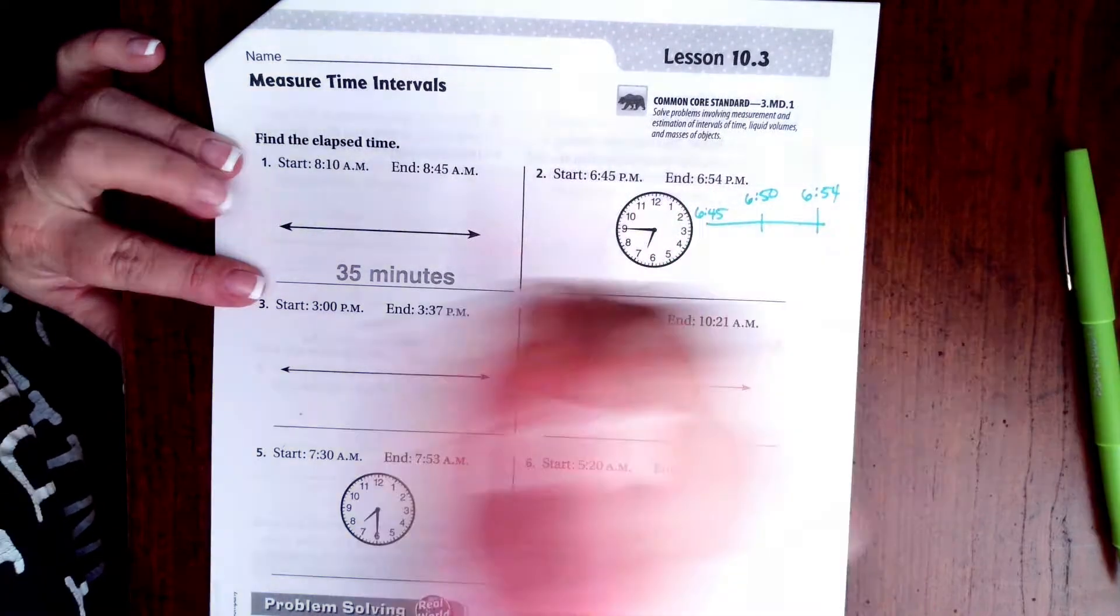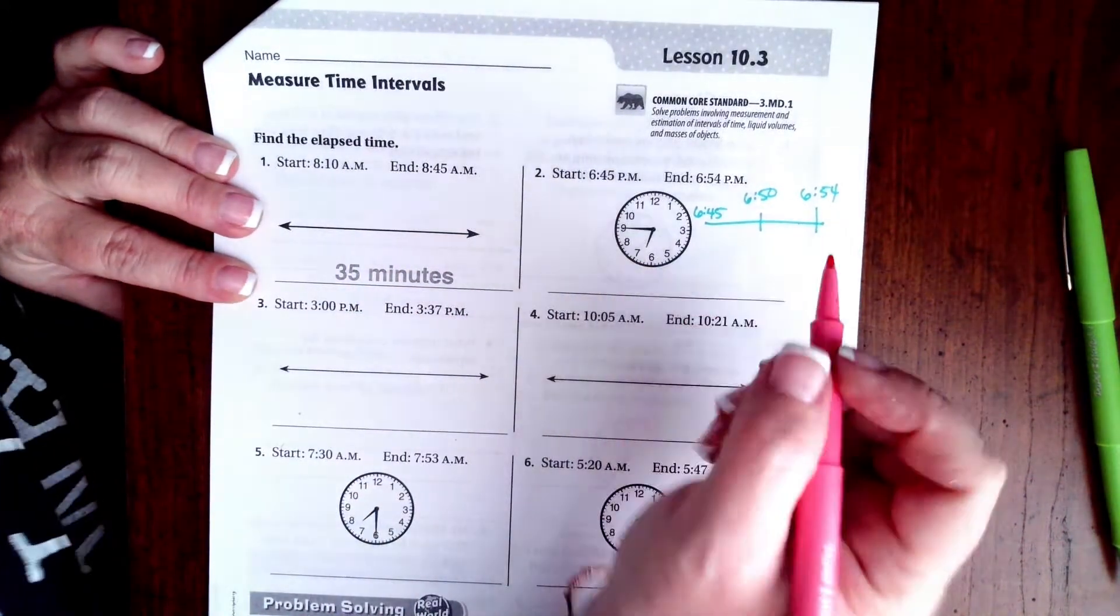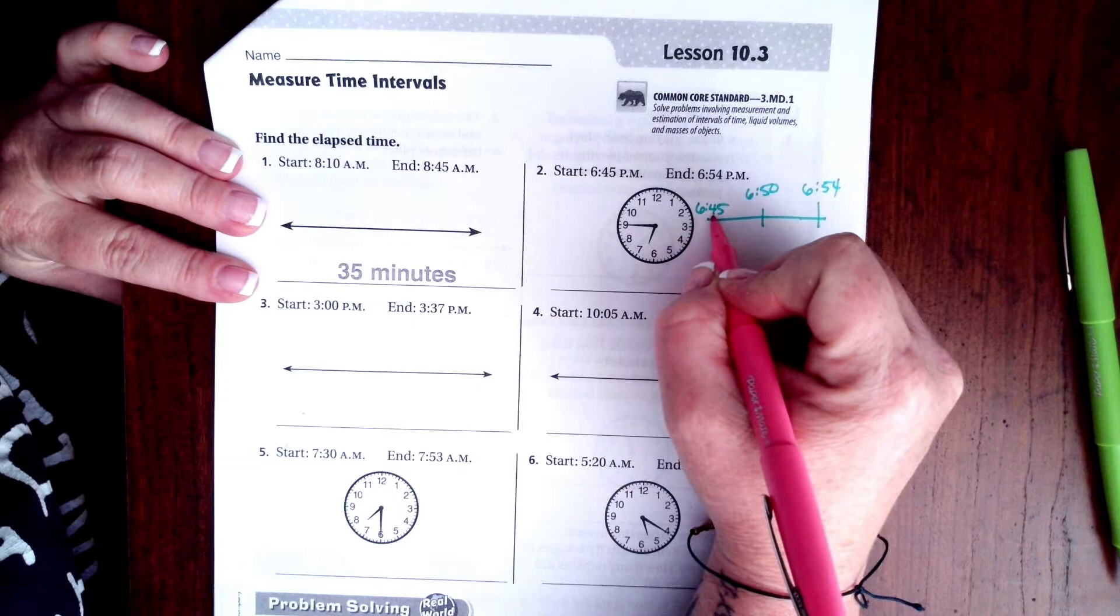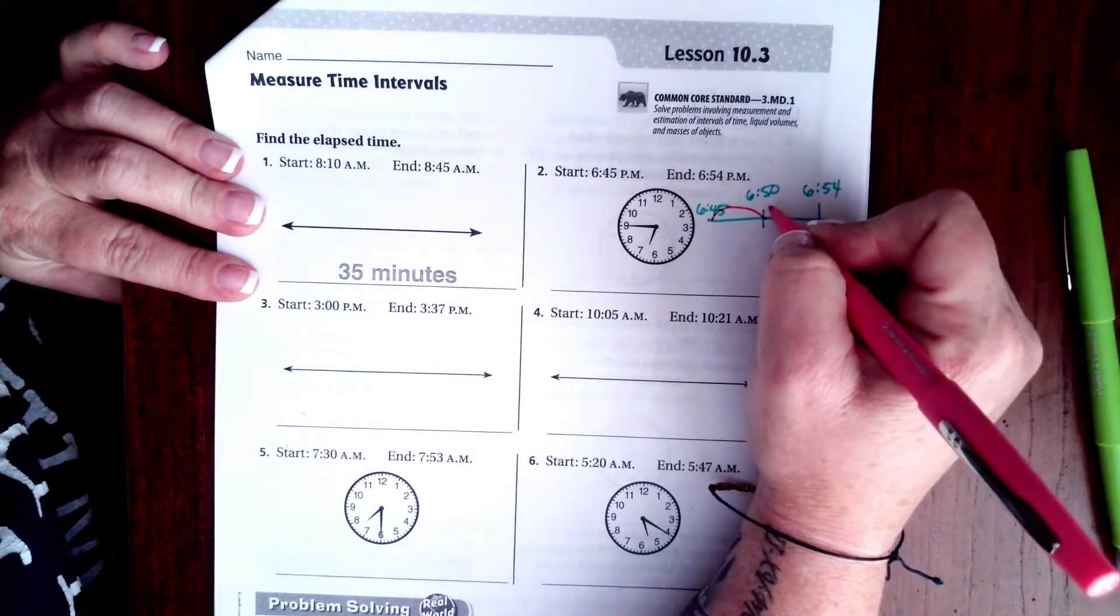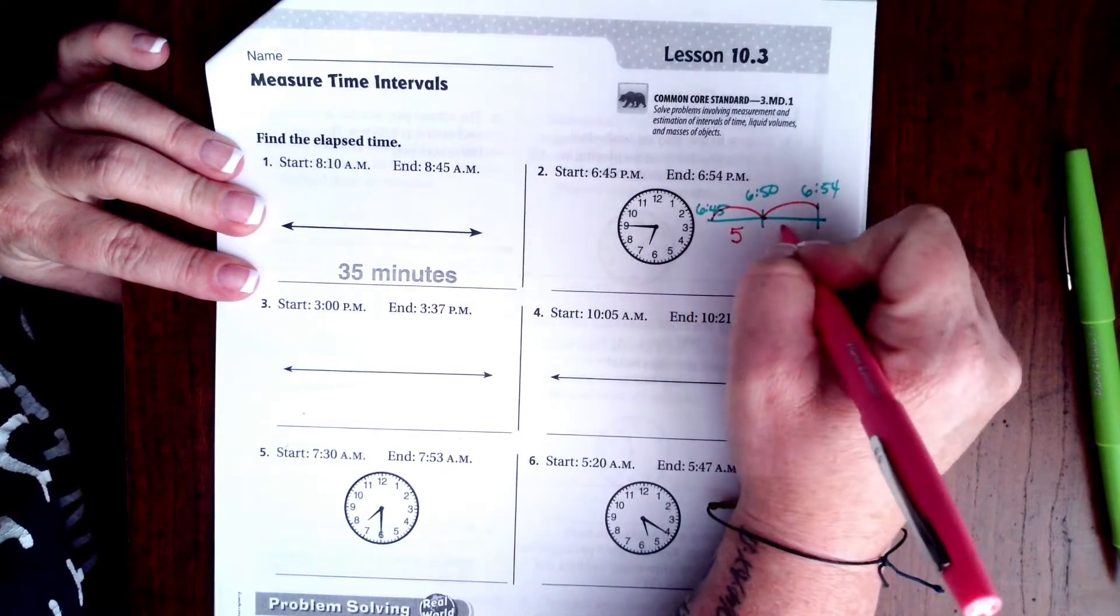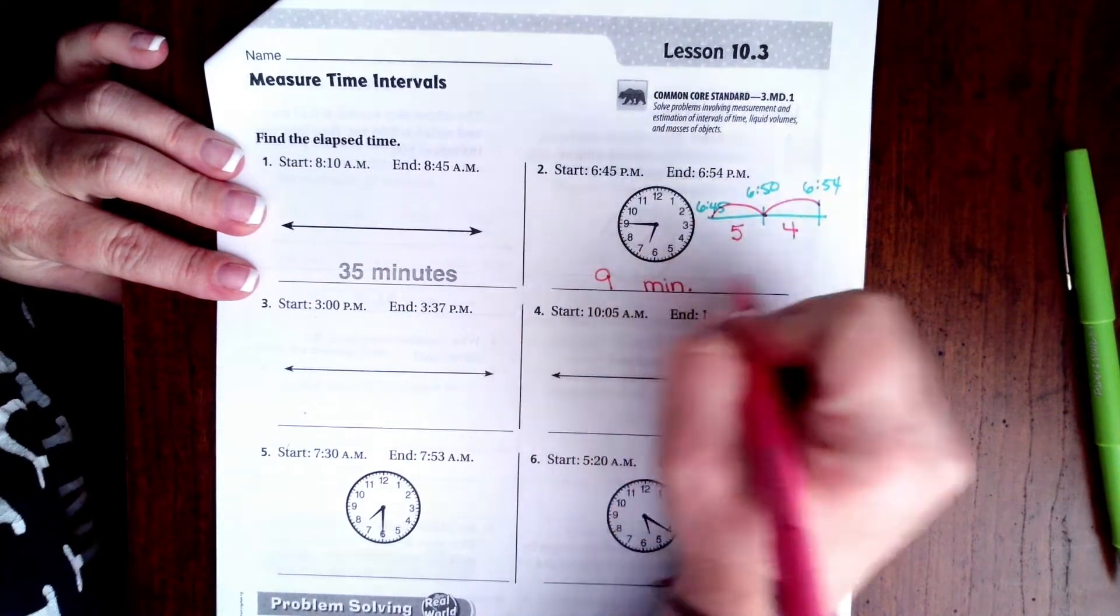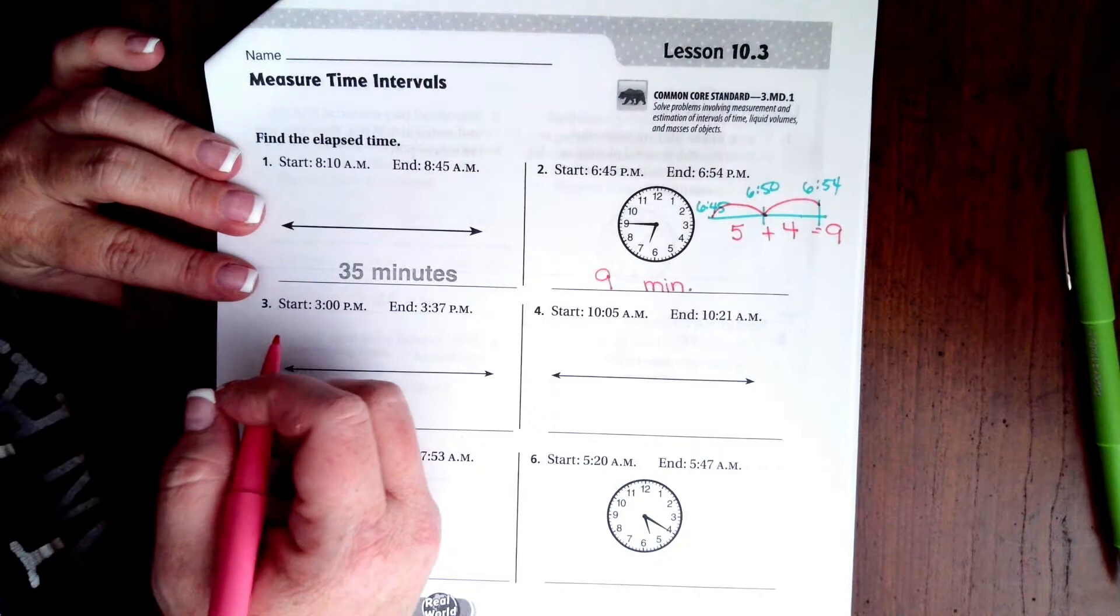And end at 6:54 p.m. Now you absolutely can do your bumps, that's totally fine. We are going to do that right now. So 6:45 to 6:50, well that's five minutes, and then 6:50 to 6:54, well that's four minutes. So we have five here, we have four here, that's going to be nine minutes. Easy guys, don't make it harder than it's got to be.